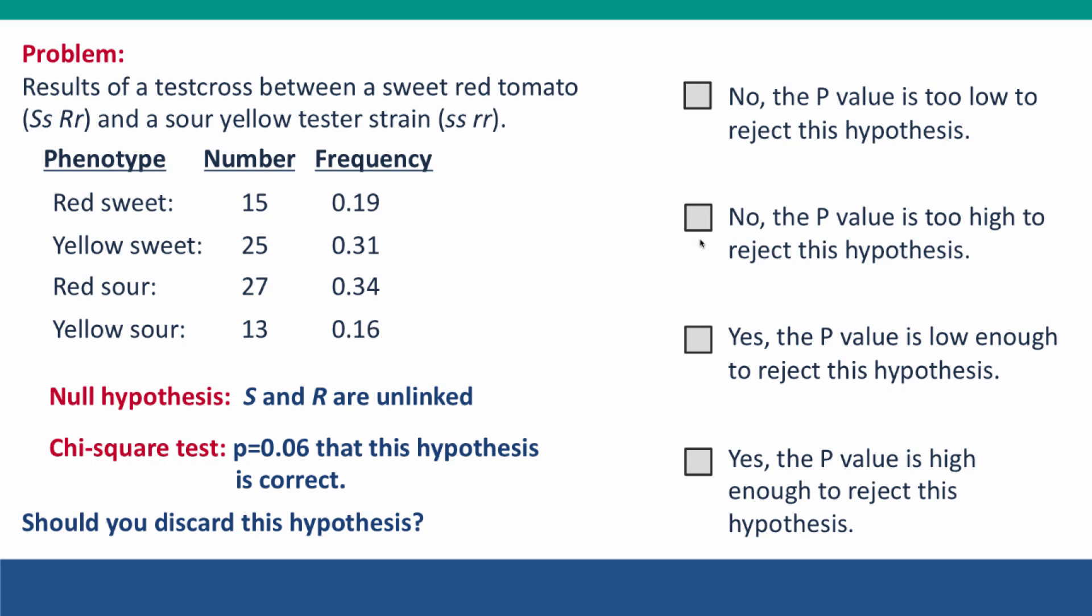Now, given this data and hypothesis, your hypothesis is that the genes are unlinked. If that hypothesis is correct, you expect the frequency of each of the four types to be 0.25. That's what your null hypothesis predicts. But this is the frequencies that you've got, and doing a chi-squared test tells you that the p-value is 0.06 that this hypothesis is correct. Should you discard this hypothesis given this p-value?